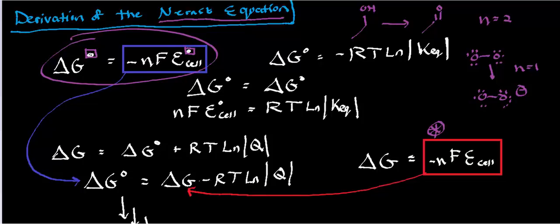F is the Faraday constant — basically 96,485 — and the units are joules per mole volt. The volt comes from the fact that the cell potential is in volts; the cell potential is essentially a voltage. We use the symbol E when talking about chemical reactions and processes. This is one simplified form of the Nernst equation.